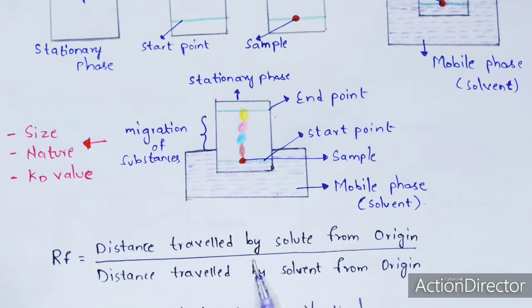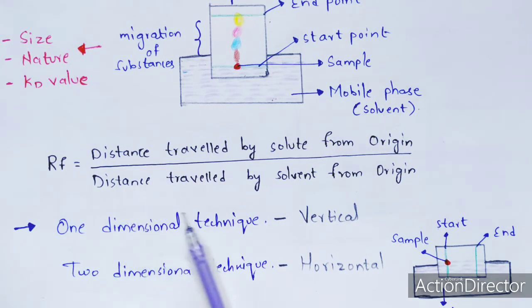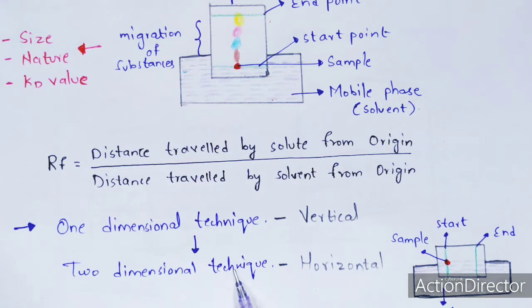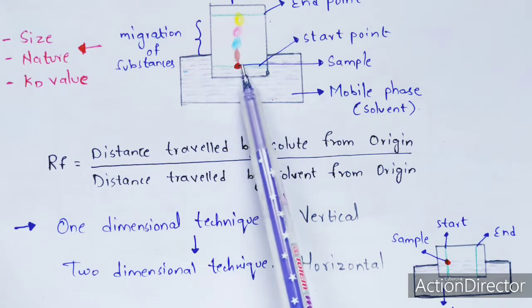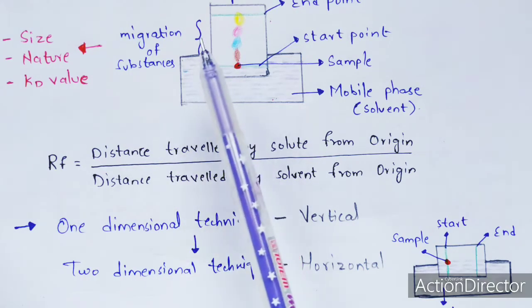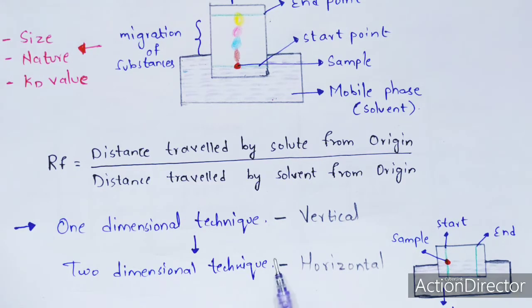Paper chromatography uses two types of techniques: one-dimensional and two-dimensional. The two-dimensional technique is mostly used because it gives proper results with less diffusion. In the one-dimensional technique, separation may not occur properly in all cases — the substances can diffuse without proper separation, especially if the sample quantity exceeds microgram levels.